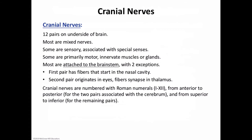Cranial nerves that are described as primarily motor do have limited sensory functions because they contain proprioceptors that respond to changes in the length and force of contraction of skeletal muscles. Because these proprioceptor fibers contribute directly to motor control, cranial nerves whose only sensory component is from such proprioceptors are considered motor nerves. This refers to cranial nerves 3, 4, 6, 11, and 12.